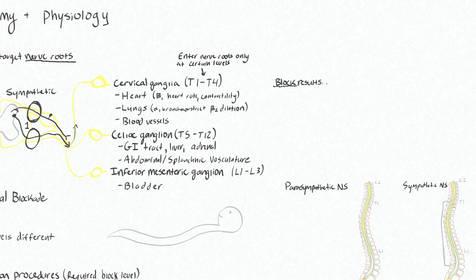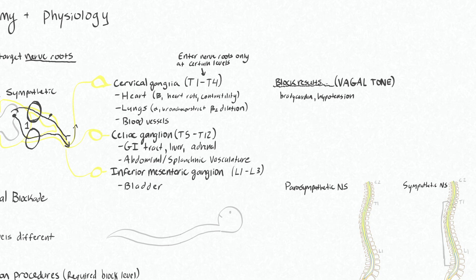So what happens when we block the nerve roots associated with any of these sympathetic ganglia? Basically we end up with unopposed vagal tone to those locations. You will lose your sympathetic tone and be left only with parasympathetic tone. For your heart, that means bradycardia and hypotension, akin to fainting or having a vasovagal episode. The effects on the lungs are actually quite minimal — in theory you could get bronchoconstriction, although even in patients with asthma neuraxial techniques are not contraindicated, which gives you an idea of how unlikely you are to see issues with that.